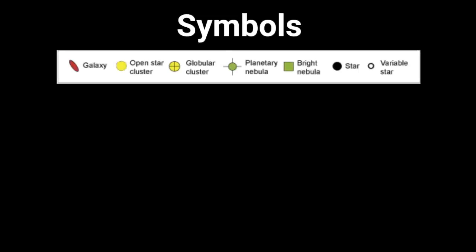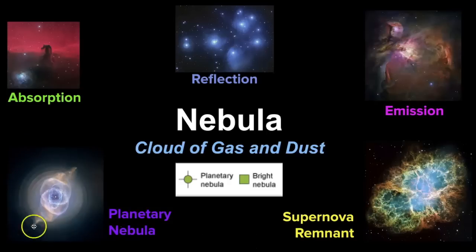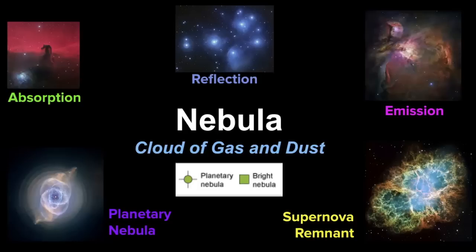Now we'll review the symbols of celestial objects you can see on a star map. The green symbols represent types of nebulae — clouds of gas and dust. The three symbols at the top represent areas of stellar birth, while the two at the bottom represent nebulae at the end of their life. I have a whole video on the different types of nebulae that exist.